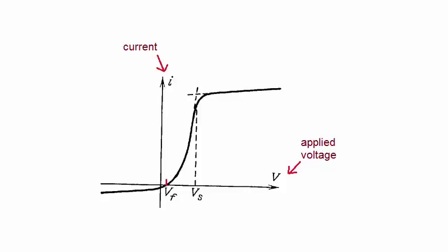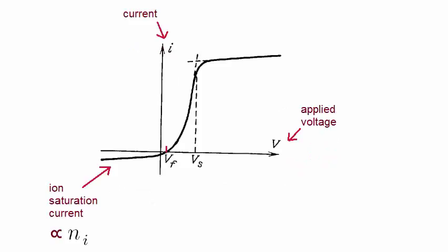As you can see, it's a highly non-linear curve. There are some notable characteristics of this curve. This region is called the ion saturation region. It allows the density of the ions to be determined.